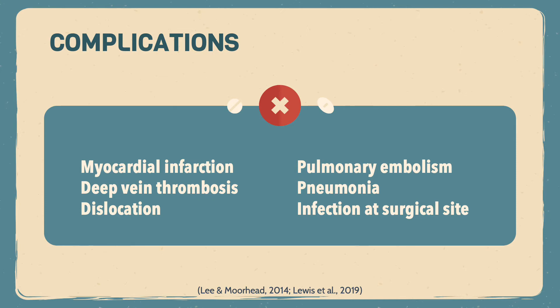A pulmonary embolism occurs when a thrombus travels from the peripheral venous system and gets lodged in the pulmonary arterial system. Pneumonia is an acute inflammation of the lungs caused by an infectious agent; older individuals and clients on bed rest with prolonged immobility are at increased risk. Infection at the surgical site is an invasion by a microorganism; infections may start in a localized area like a surgical incision but can spread via the blood and become systemic.